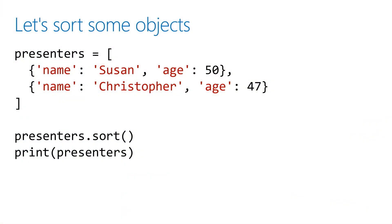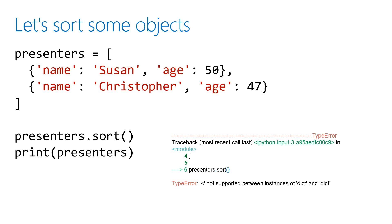So I have this list of values here — Susan, age 50, and Christopher, age 47. If I just call sort to try and sort that out, I'm going to get an error back because it doesn't know whether to sort by the name or to sort by the age. You'll actually get an error when you try to run this code.